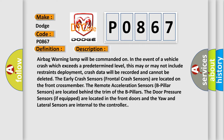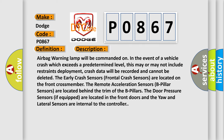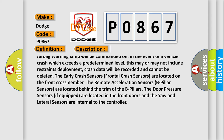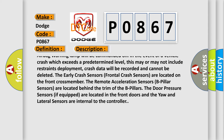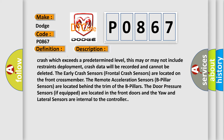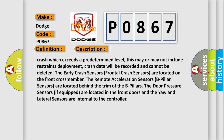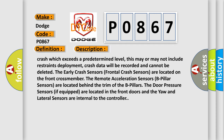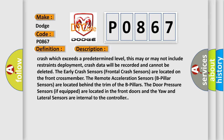The early crash sensors — frontal crash sensors — are located on the front cross member. The remote acceleration sensors — B-pillar sensors — are located behind the trim of the B-pillars. The door pressure sensors, if equipped, are located in the front doors. The yaw and lateral sensors are internal to the controller.